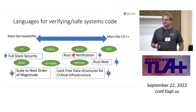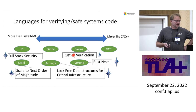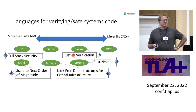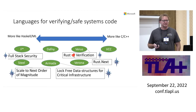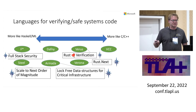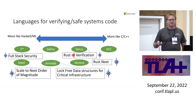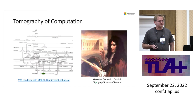Each tool has its north stars: F-star is characterized as targeting full-stack security; Steel aims to scale to the next order of magnitude of systems; and Verus is the Rust verification approach.